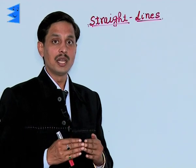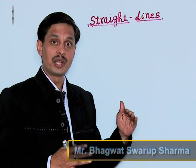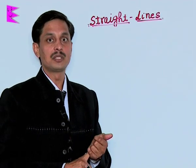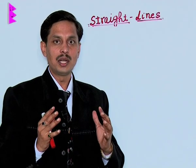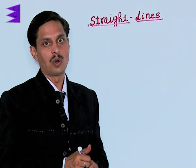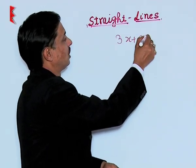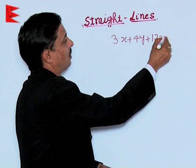Now, if the same line which I have converted in the slope-intercept form is required to convert to the intercept form, I am writing again the same equation: 3x plus 4y plus 12 equals 0.